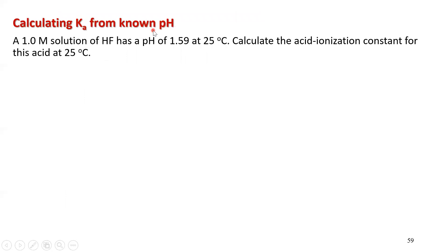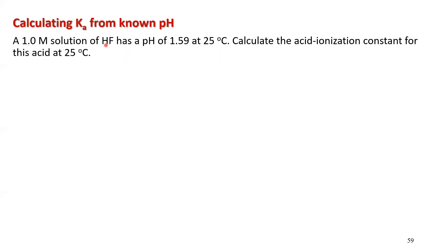Let's look at a different version of the same kind of problem. We have a 1.0 molar solution of hydrofluoric acid with a pH of 1.59. We want to calculate Ka for this acid. First, write the equation for the acid ionization: HF plus H₂O. Practice that part first — what are the reactants, what are the products, what's the equilibrium?